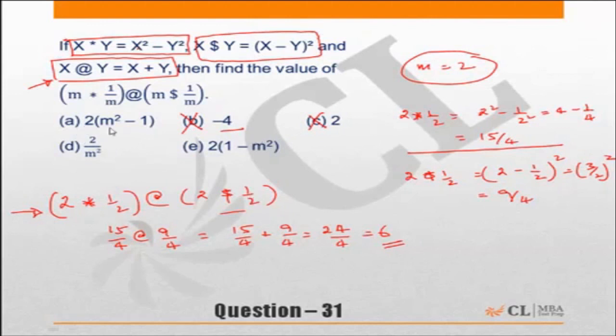In choice a, if I put m equal to 2, this will come 2, 2s of 4, 4 minus 1, 3, 3 into 2, 6. So this is giving me a value of 6 for m equal to 2. Can be correct, hold on with this. What about the other choices?